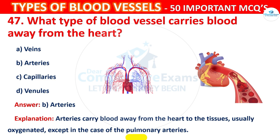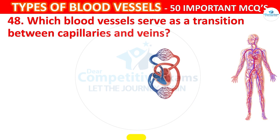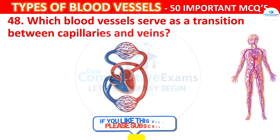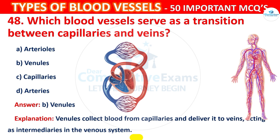Question 48. Which blood vessels serve as transition between Capillaries and Veins? Options: Arteries, Venules, Capillaries, or Arterioles. The correct answer is B, Venules. Venules collect blood from capillaries and deliver it to veins, acting as intermediaries in the venous system.